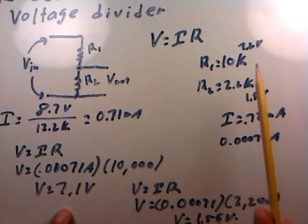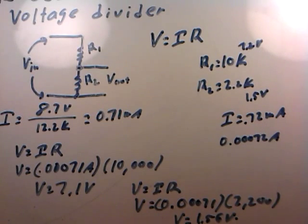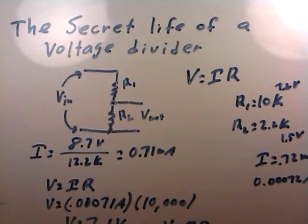See, it's all very consistent. There's 7.1 calculated, 7.2 measured. 1.56 calculated, 1.5 measured. That's what we mean by the secret life of a voltage divider—it isn't really a secret. It's just some application of Ohm's law.